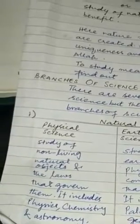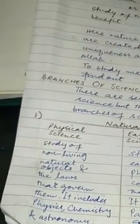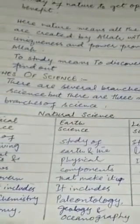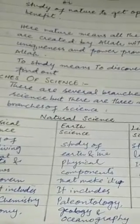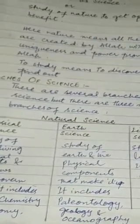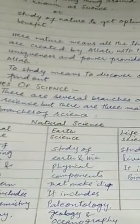And it includes physics, chemistry and astronomy. Now, earth science. By the name of earth, we can understand that it is the study of earth and the physical component that makes it up.